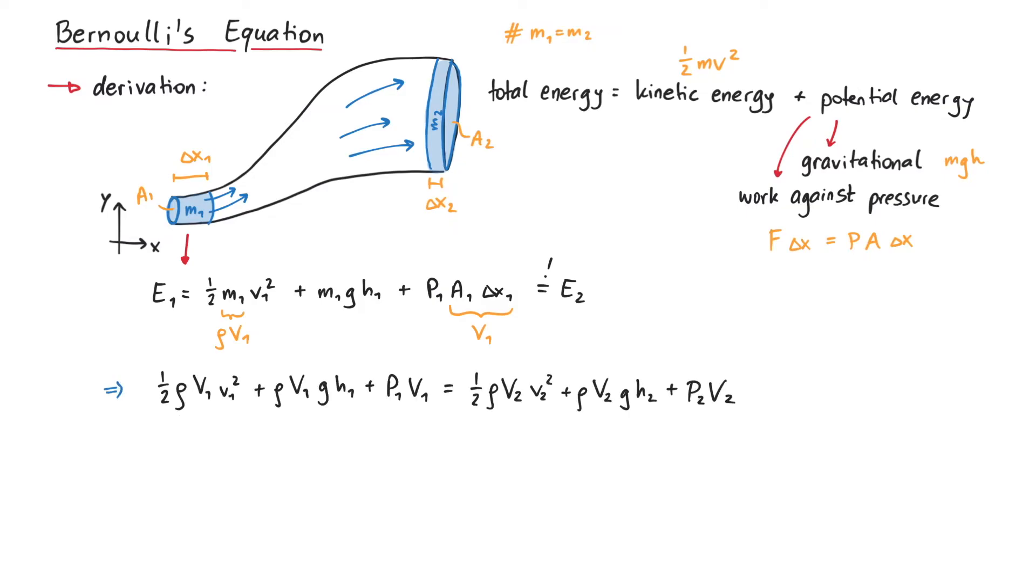Now recall the continuity equation, which states that for an incompressible fluid, V1 must be the same as V2, since the same amount of fluid flowing in must also flow out, while nothing gets lost or created in the middle. This means we can remove the volume from the whole equation and get Bernoulli's equation.